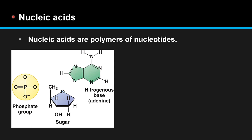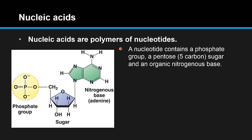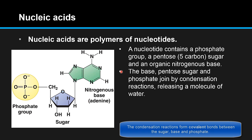Nucleic acids are polymers of nucleotides. A nucleotide contains a phosphate group, a pentose 5-carbon sugar, and an organic nitrogenous base. Here we have our phosphate group, the pentose or 5-carbon sugar, and a nitrogenous base — in this example, adenine.